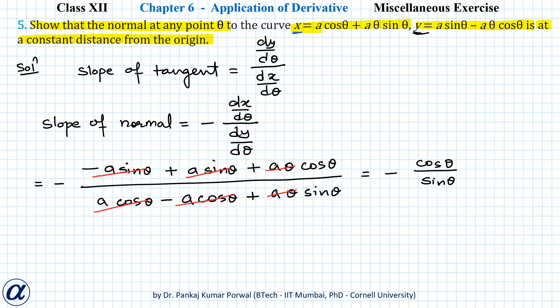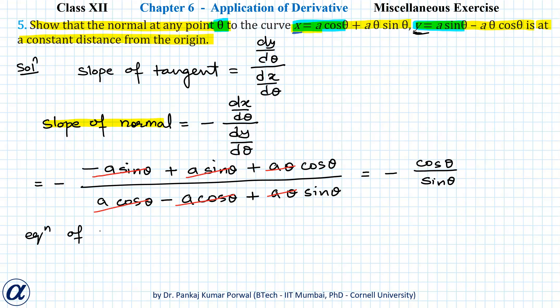I am not writing this as cotθ because later I'll have to cross multiply to get the answer. Now I have the slope of the normal at point theta and the x and y coordinates, so I can write the equation of the normal in point-slope form: y minus y₀ equals m times x minus x₀.